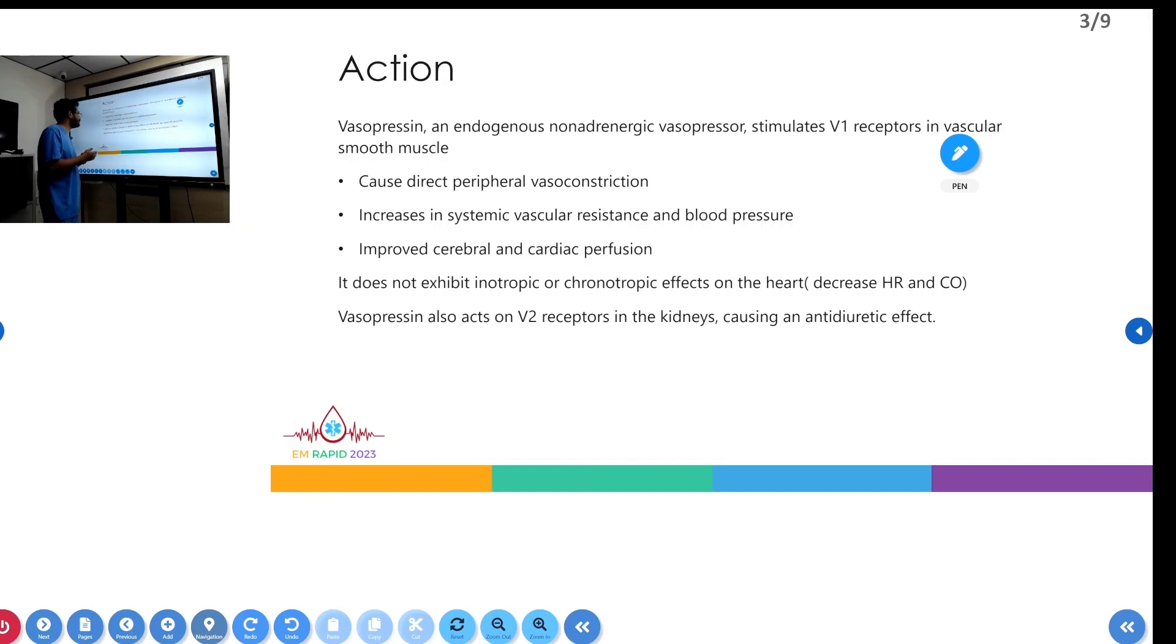It also helps improve cerebral and cardiac perfusion. It does not have inotropic or chronotropic effects on the heart. Vasopressin acting on V2 receptors in the kidneys causes an anti-diuretic effect, which is why it's called ADH, anti-diuretic hormone.